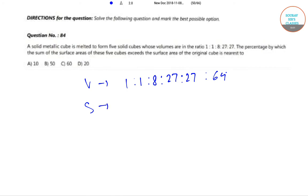The ratio of their sides would be 1:1:2:3:3:4. All we have done is basically taken cube roots of volume, and the ratio of the area would be 1:1:4:9:9:16. What we have done over here is we have squared the ratios of sides.